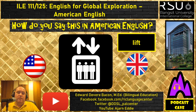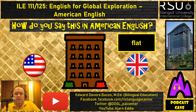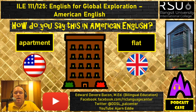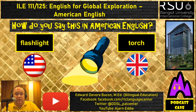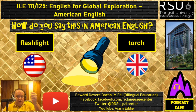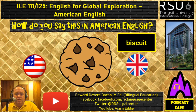British people say 'lift,' Americans say 'elevator.' British people say 'flat,' Americans say 'apartment.' British people say 'torch,' Americans say 'flashlight.' If an American heard the word 'torch,' they'd think of something like the Statue of Liberty holding a big torch — so there may be some miscommunication there.